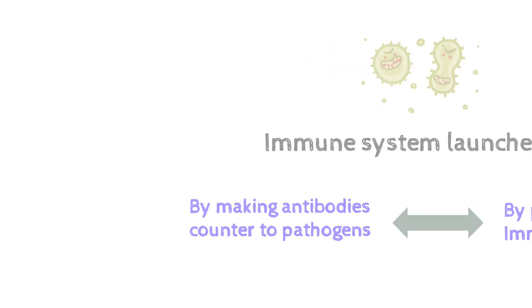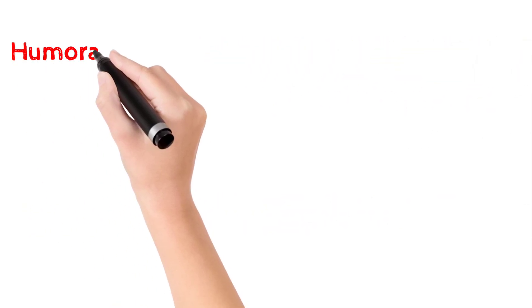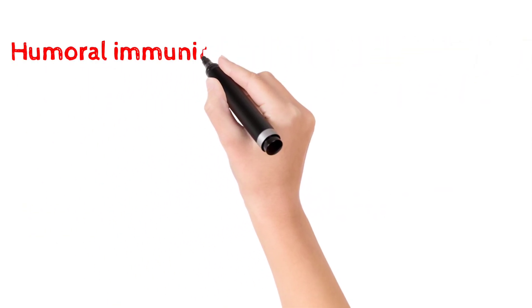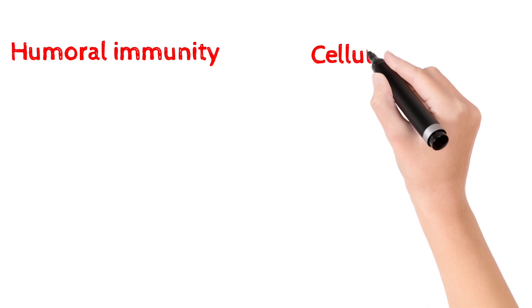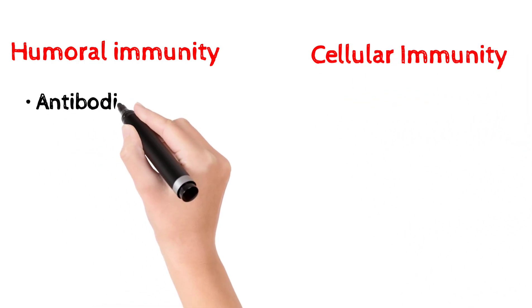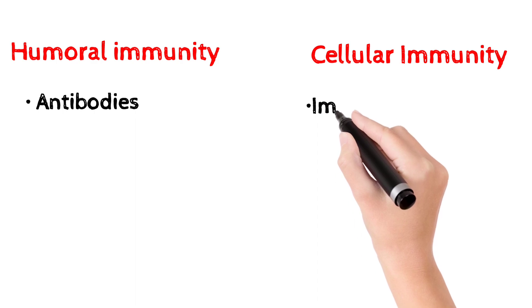Adaptive immunity is divided into two types: first, humoral immunity, and second, cellular immunity. Humoral immunity involves antibodies, while cellular immunity involves immune cells.